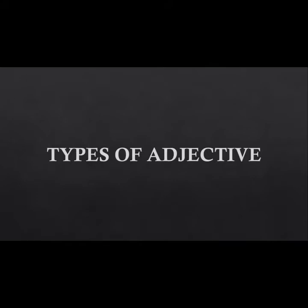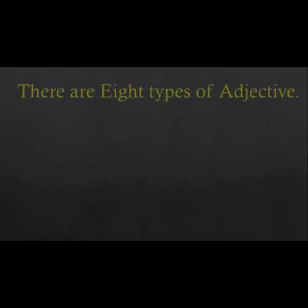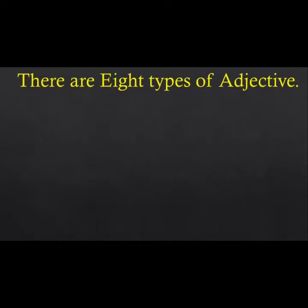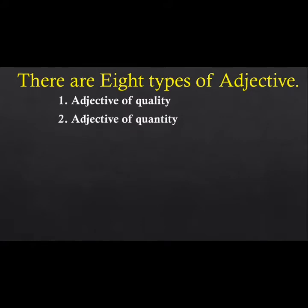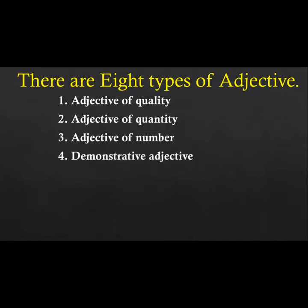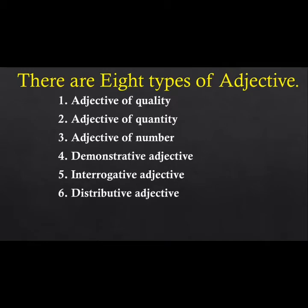Let us now look at the types of adjectives. There are eight types of adjectives: adjective of quality, adjective of quantity, adjective of number, demonstrative adjective, interrogative adjective, distributive adjective, proper adjective, and possessive adjective. Let us understand them one by one.